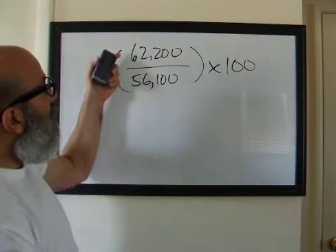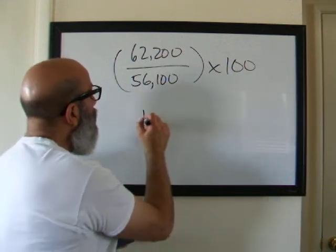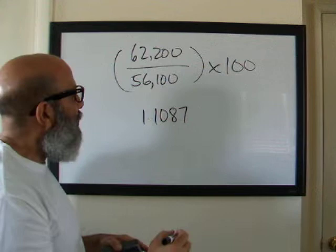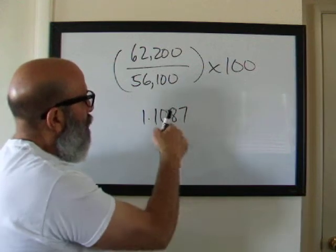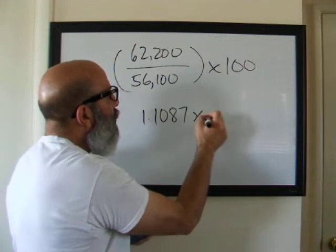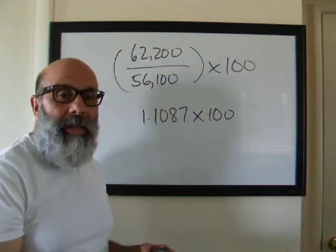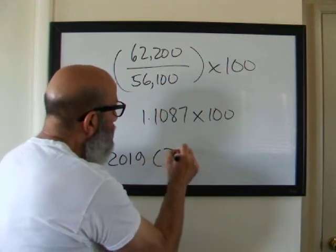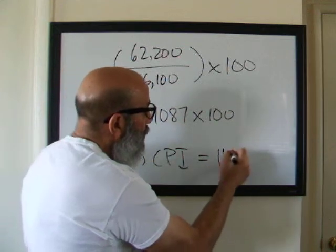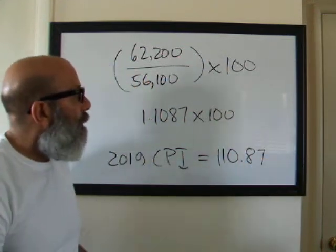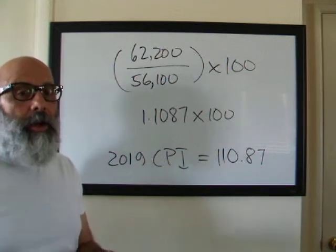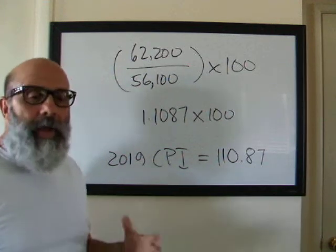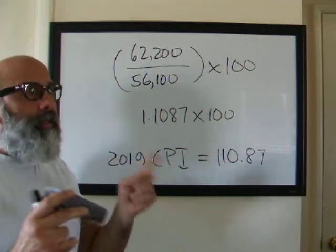So if we take the 62,200 divided by the 56,100, we get 1.1087. I wrote this down beforehand so I wouldn't mess it up. So now I'm going to take this resulting quotient and I'm going to multiply it times 100 and that means that the CPI for 2019, so 2019 CPI is going to equal 110.87. Now that's the indexed value of the increase in price but it's not inflation yet. It's just the CPI index value between 2018 and 2019.